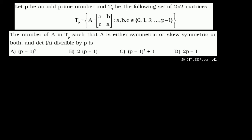So the number of matrices A in T_p such that A is either symmetric or skew symmetric, or both, and the determinant of A is divisible by p is what we want to find.